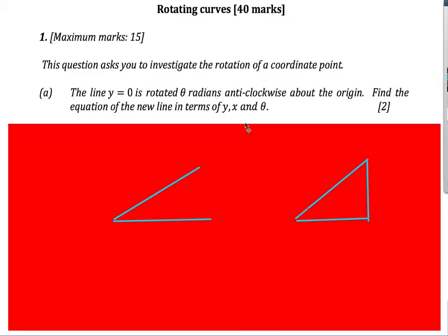First question, two marks: rotate the line y equals zero. We're going to rotate it theta radians anti-clockwise about the origin, and we want the equation of the new line in terms of y, x, and theta.